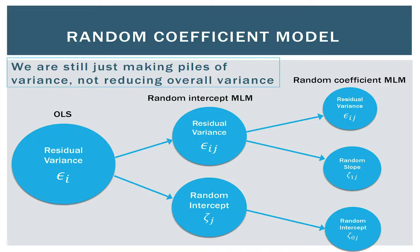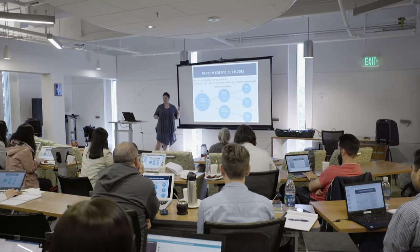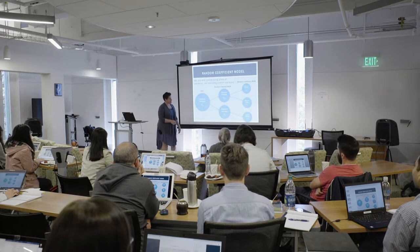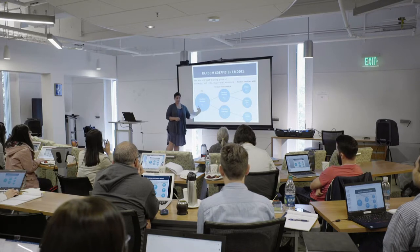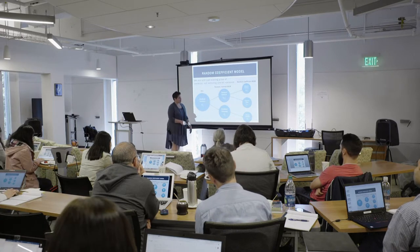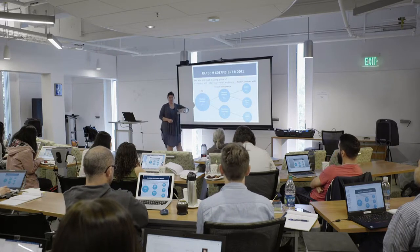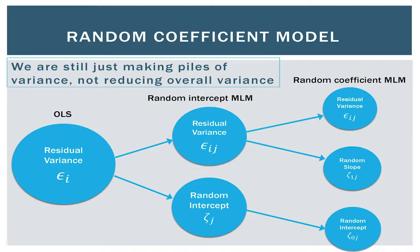Here's a picture of piles of variance — what's happening with the random coefficient model. We're not actually reducing any of the variance; we're just modeling it differently. In OLS, we throw everything into the error term even though we know there's dependency. In a random intercept model, we split it into the random intercept. But we still have a lot of residual error. In the random coefficient model, we still have our random intercept, but now we divide the residual variance into a random slope or random coefficient — allowing those lines to be different — and our residual variance error. With each model, our residual variance gets smaller, which is exactly what we want.